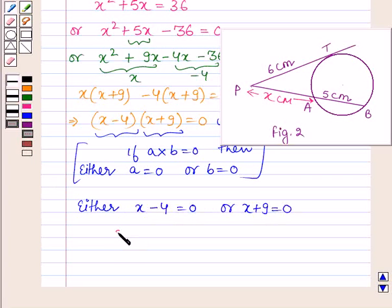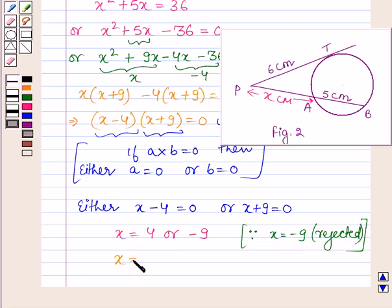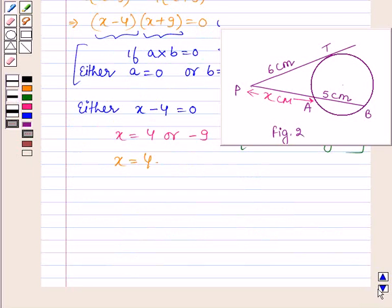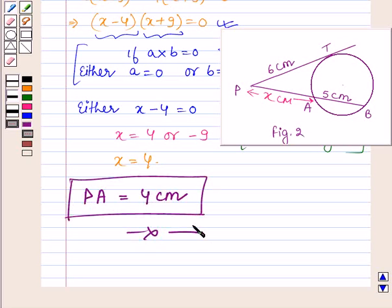So we have x is equal to 4 or minus 9. Now, the length cannot be negative, therefore, x is equal to minus 9 is rejected and we have x is equal to 4. That is, the length of PA is equal to 4 centimeters. So, this completes the session. Bye and take care.